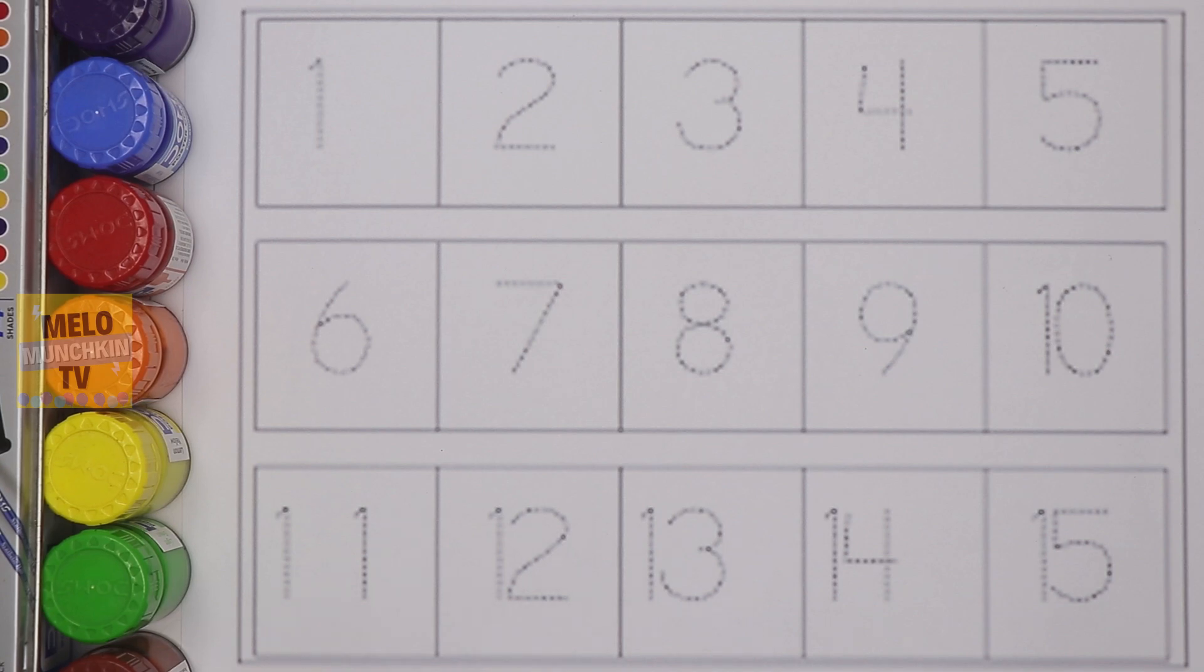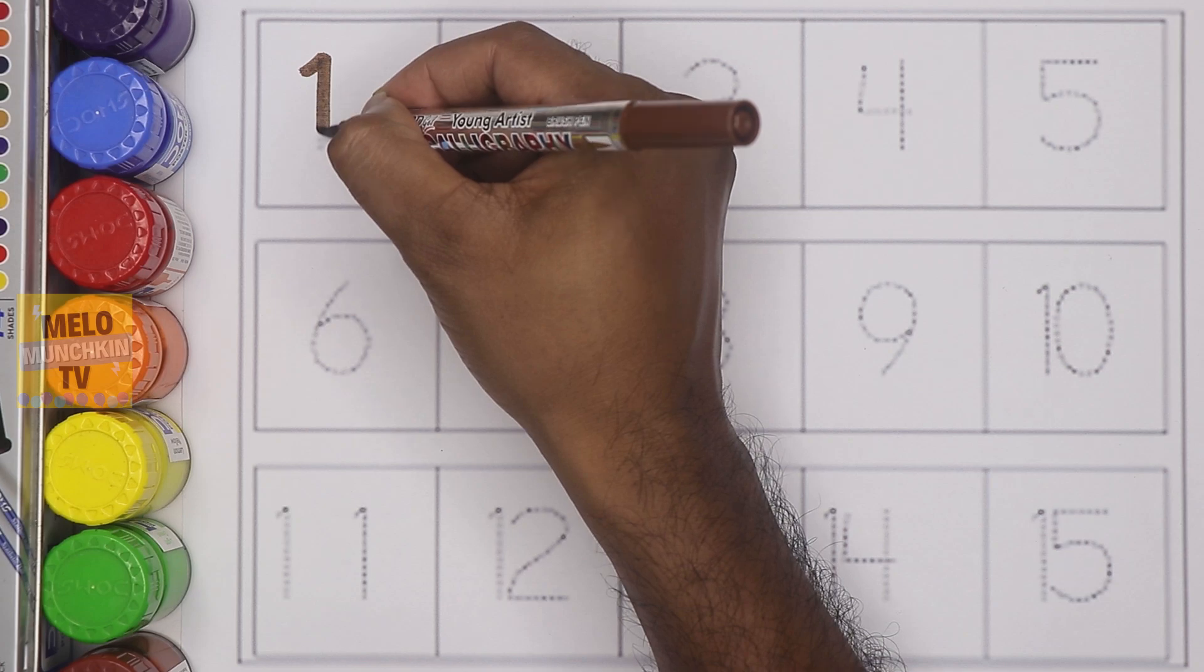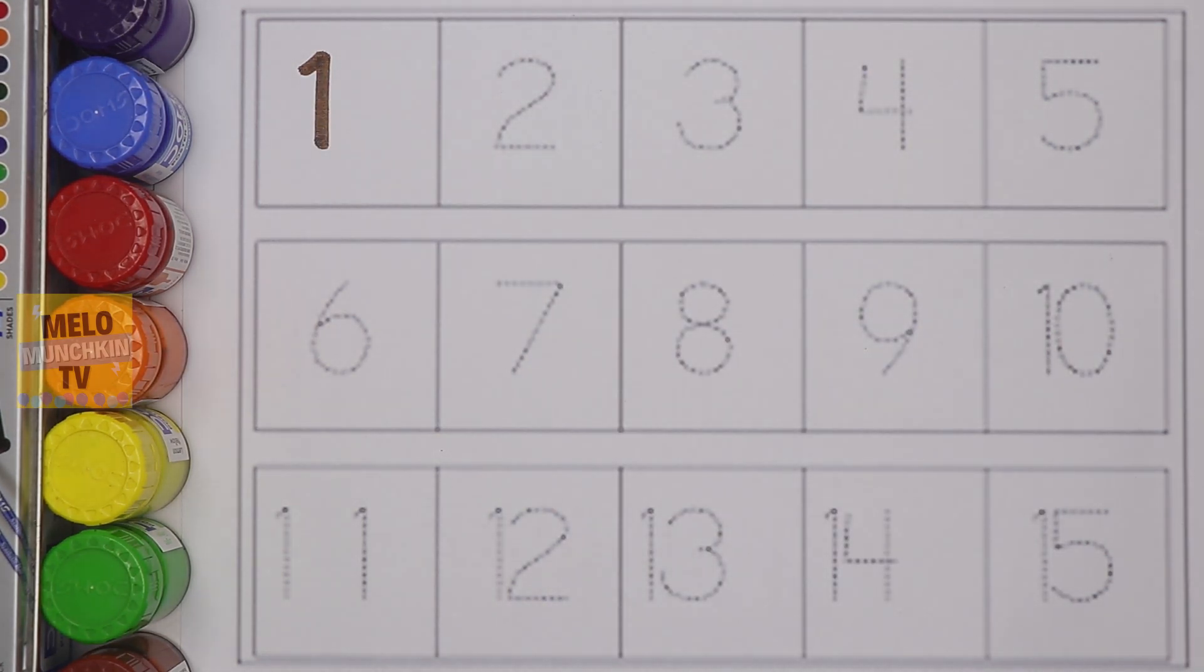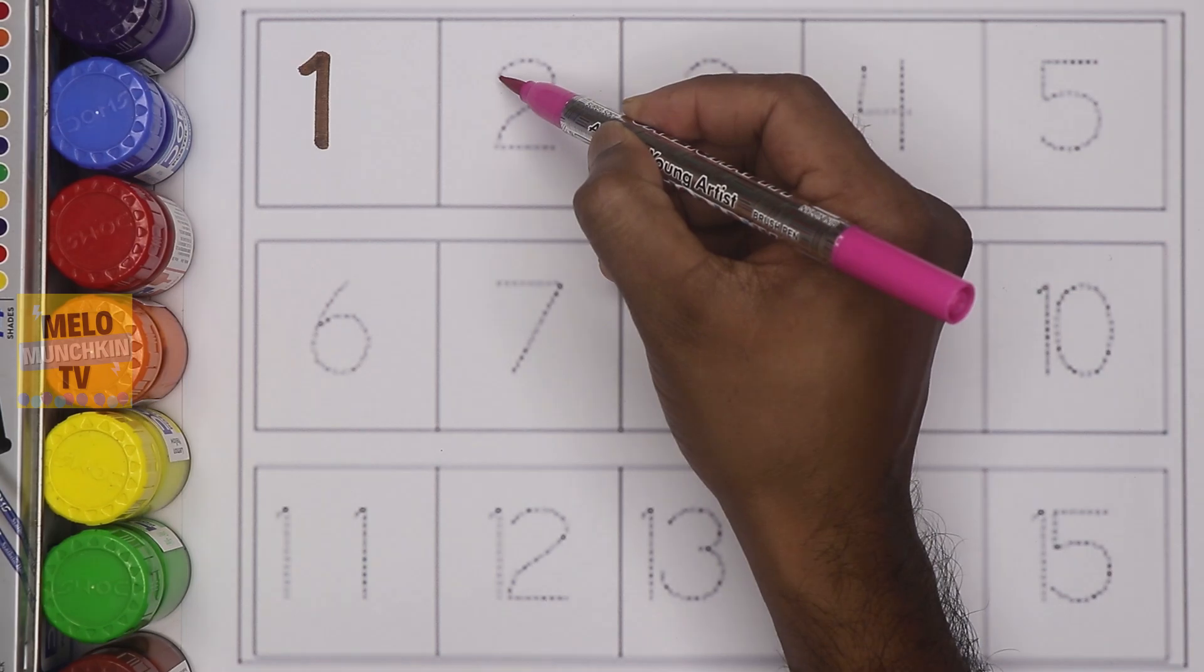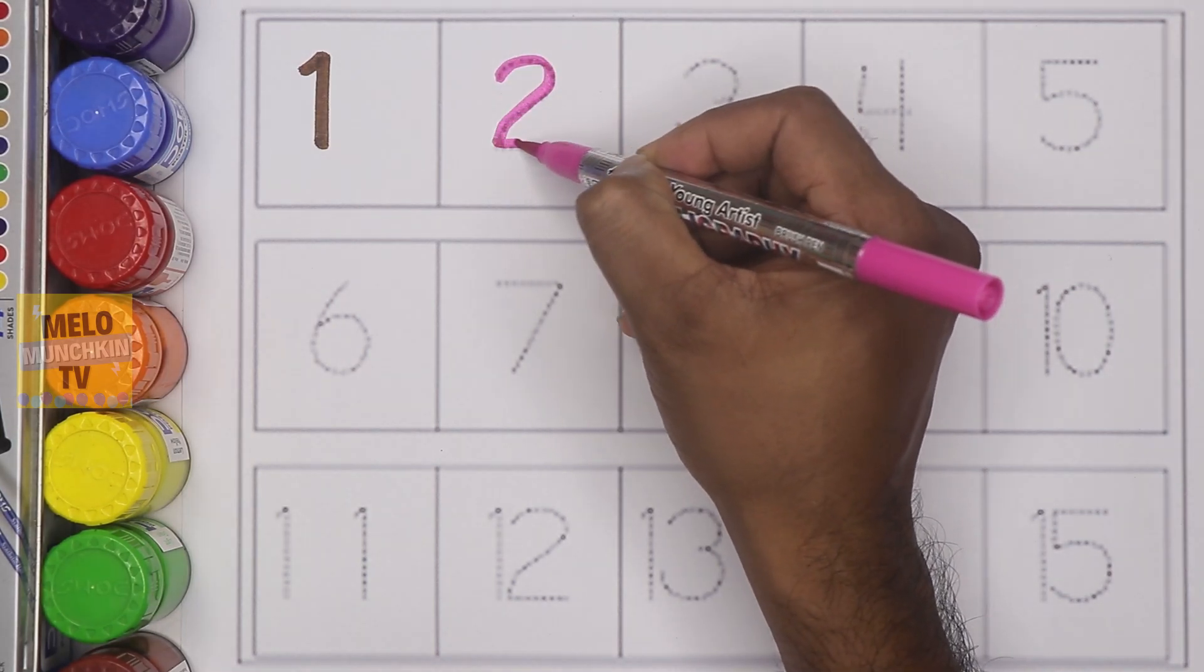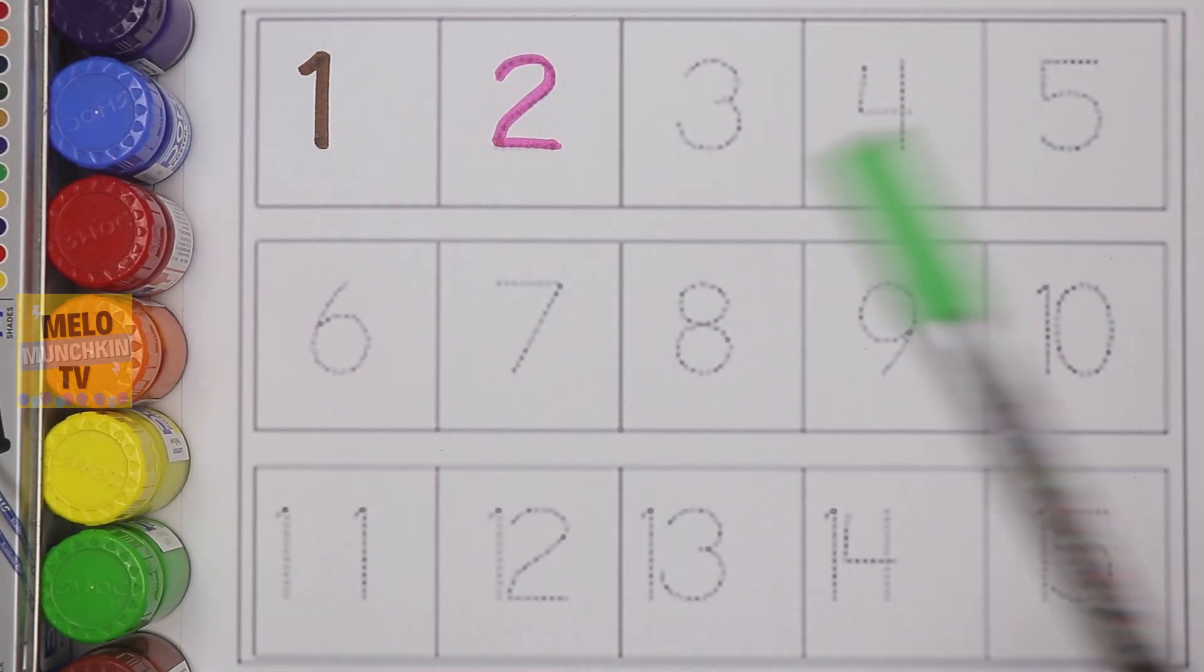First I'll take brown color and write the number 1. This is number 1. Next I'll take pink color and write number 2. This is number 2. Next I'll take green color, this is light green color, and write number 3.